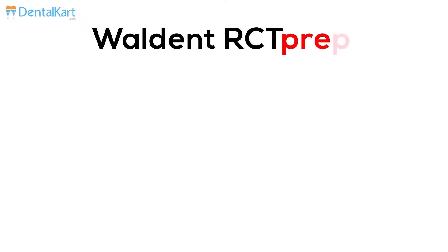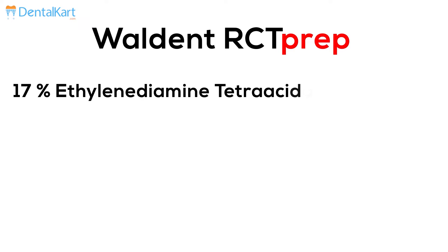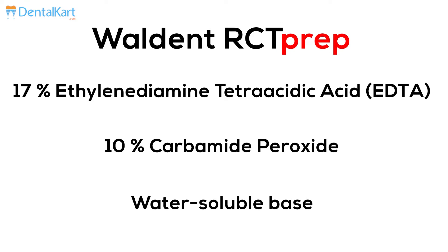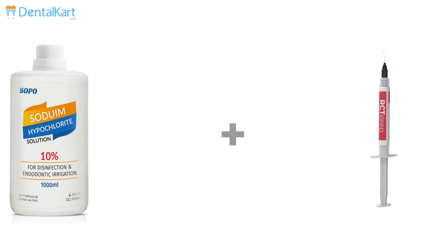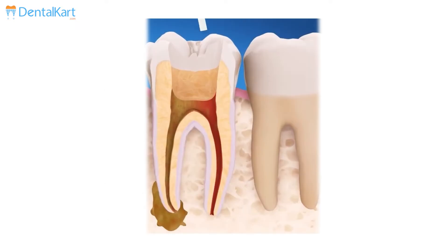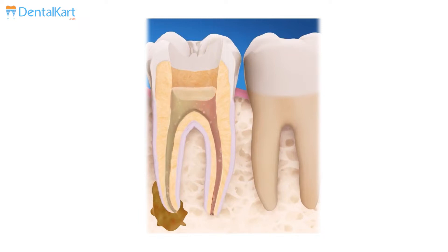Valdent RCT prep contains 17% ethylene diamine tetra acetic acid (EDTA) and 10% carbamide peroxide in a water soluble base. It creates an effervescent effect with sodium hypochlorite, and this combination promotes bleaching of the internal surfaces. Carbamide peroxide releases oxygen and further enhances the bleaching process.